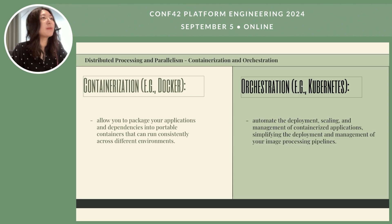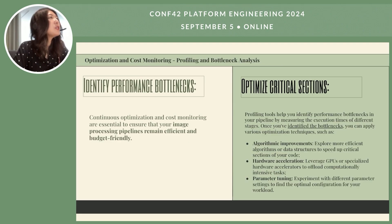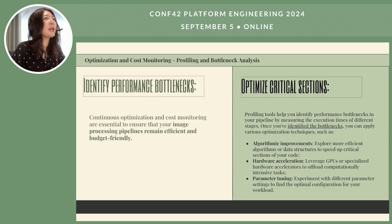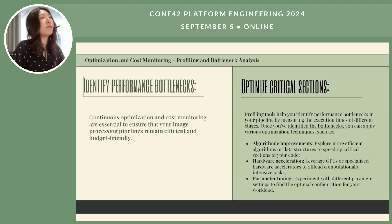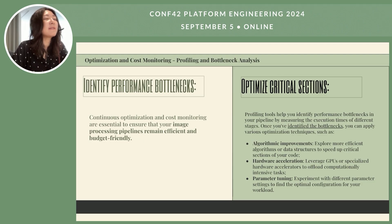Kubernetes simplifies the process of deploying your image processing pipeline across multiple machines and ensures it runs reliably even in the face of failures. Continuous optimization and cost monitoring are crucial to remain efficient and budget-friendly. Profiling tools help identify performance bottlenecks by measuring execution time at different stages. Once bottlenecks are identified, we can apply techniques such as algorithm improvements, using more efficient algorithms or data structures, and hardware acceleration — leveraging GPUs or specialized hardware accelerators to offload computationally intensive tasks. Parameter tuning involves experimenting with different settings to find optimal configurations for the workload.